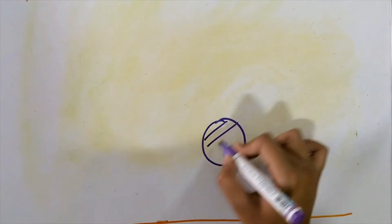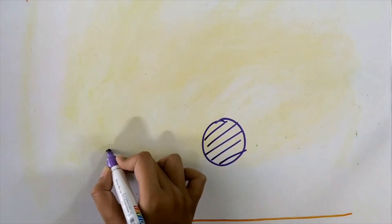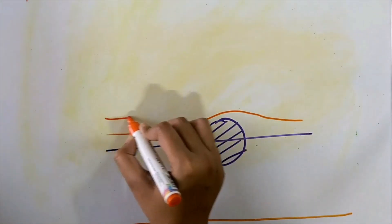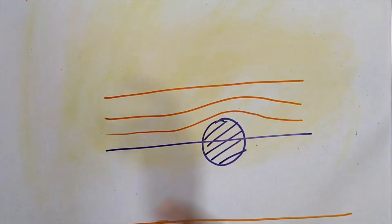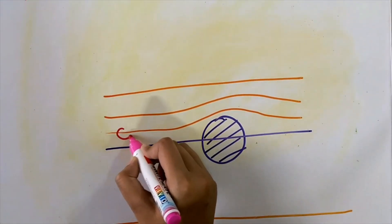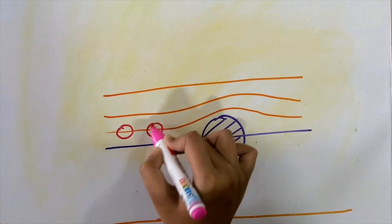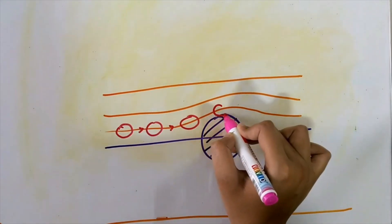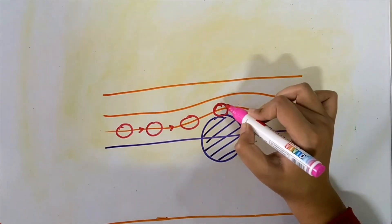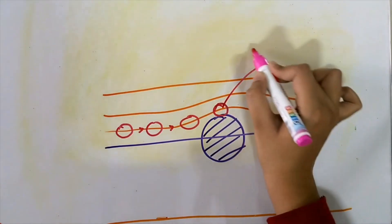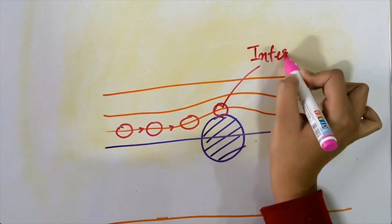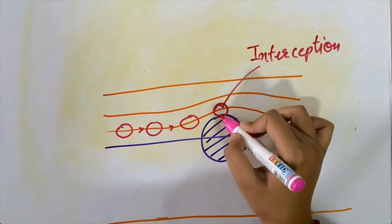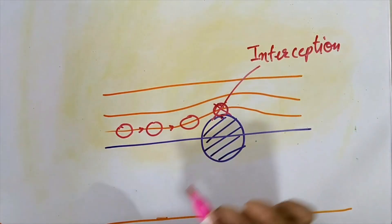This is a single fiber of your filter, and these are the gas streamlines. Streamlines curve due to the obstacle. Your particle is following the streamline, but by virtue of its size and the position of that streamline, it comes in contact with the fiber and is hence removed from the air. This process is known as interception — as soon as the particle touches the fiber, it is captured. This is the first mechanism.